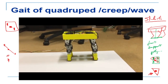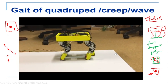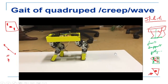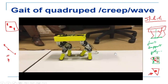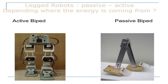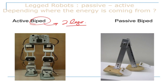Moving from quadrupeds, let's look at bipeds. Bipeds, as the name indicates, have two legs. Interestingly, biped robots can be active or passive. In the case of an active biped, it has motors at the joints — servo motors at each joint. For example, a biped with two DOF per leg has eight DOF total and can walk straight. The energy comes from electrical energy supplied to the motors, which are controlled such that the robot moves in a particular direction.